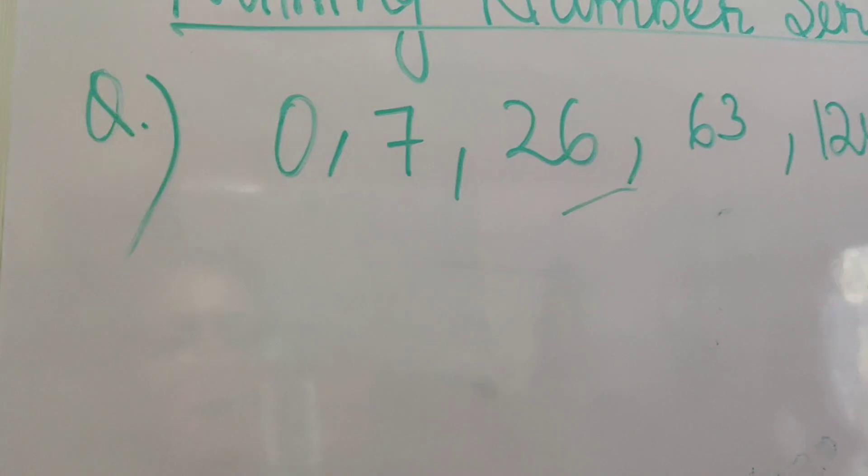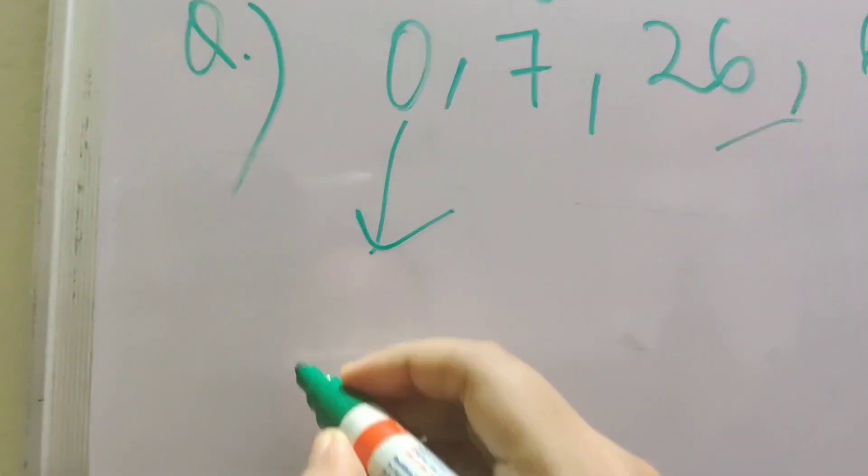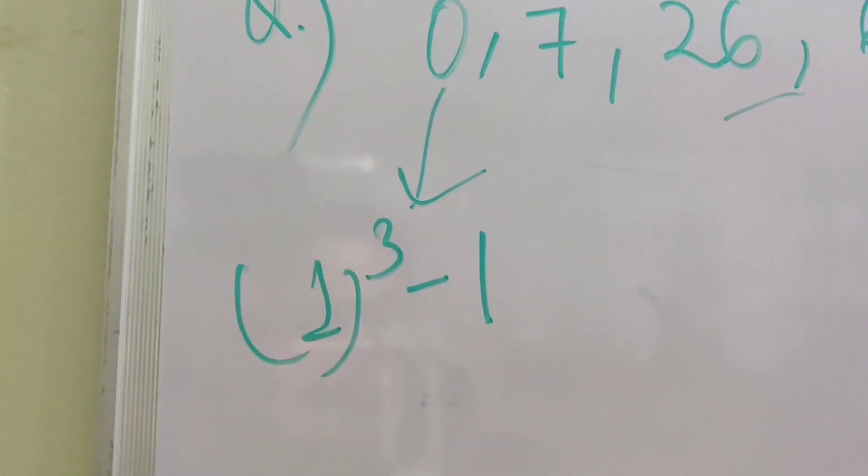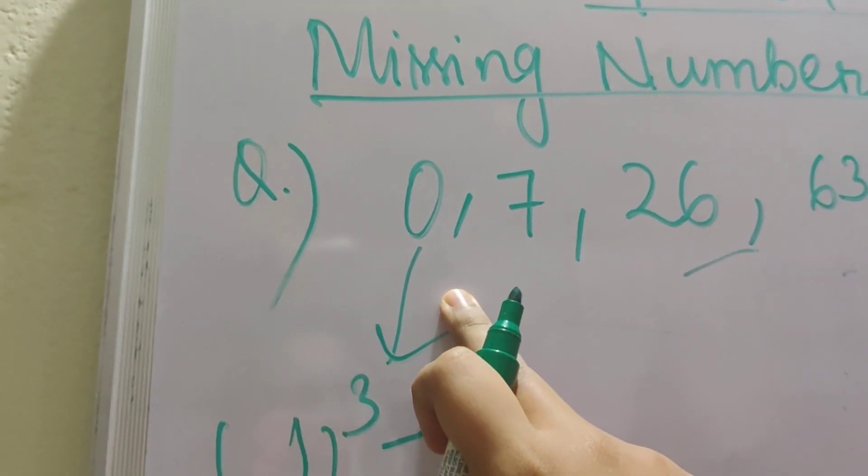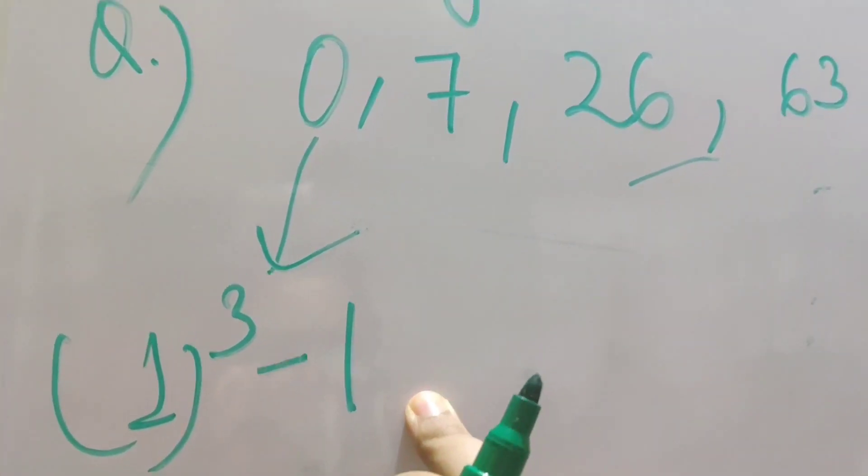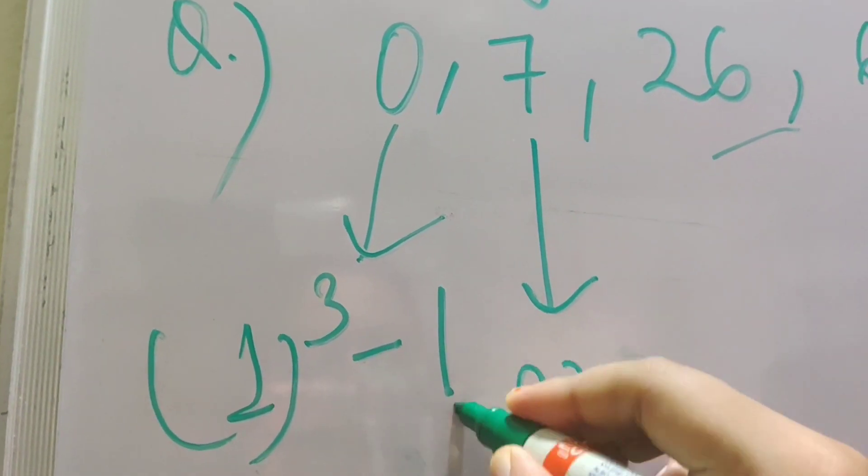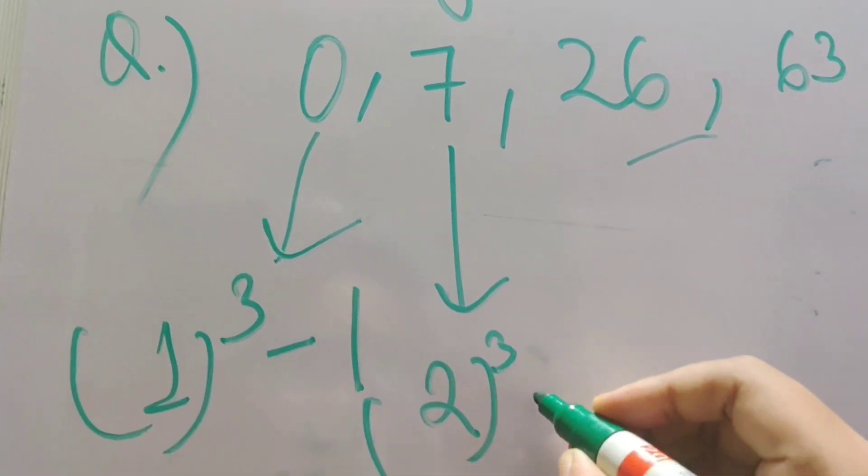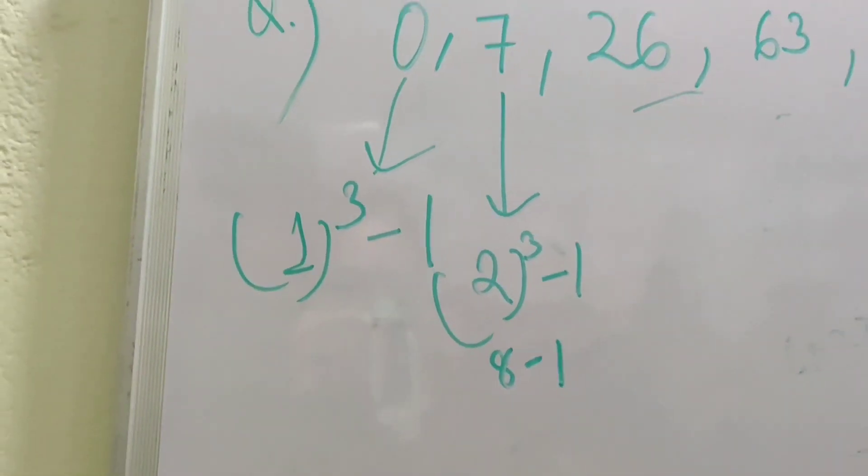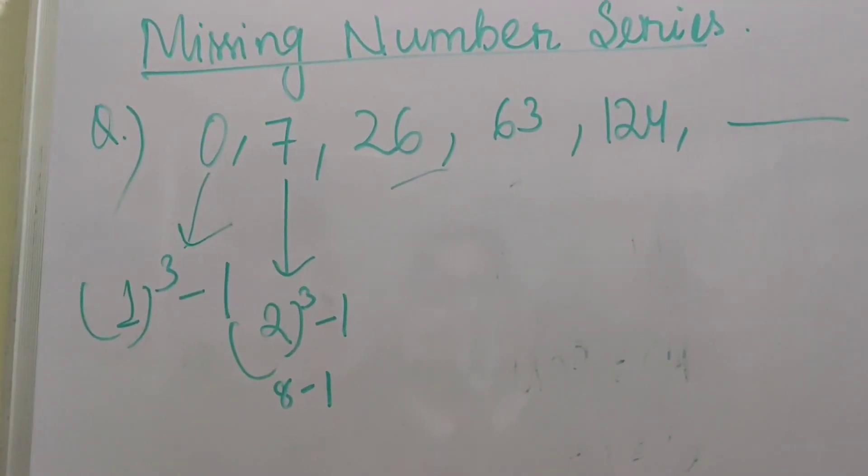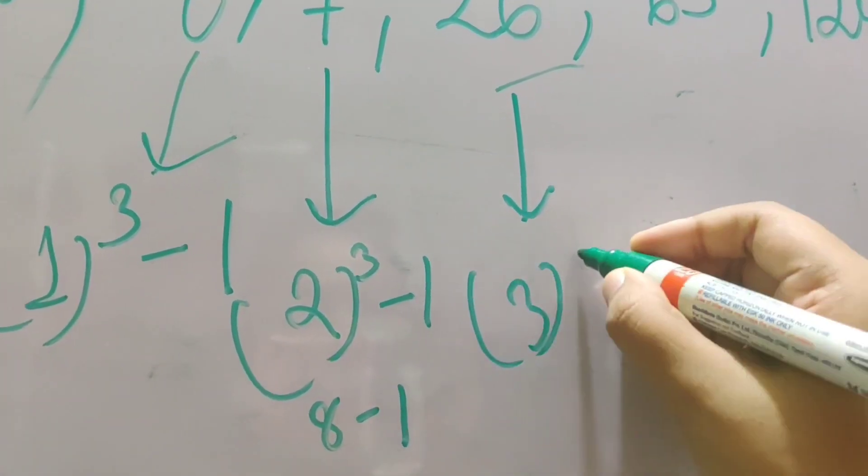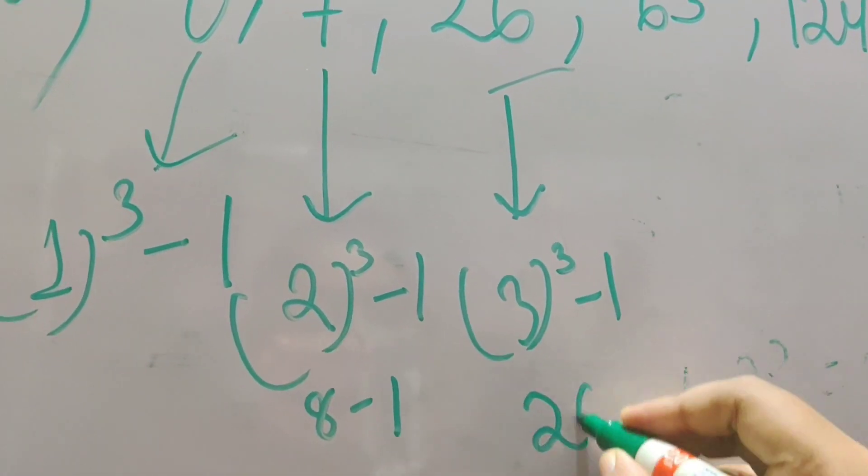Now 0 is 1 cube minus 1. 1 cube minus 1 will give us 0. Now after 1 let us move on to the next number which is 2. The cube of 2 is 8, minus 1 will be 7. Similarly the cube of 3 is 27, minus 1 is 26.